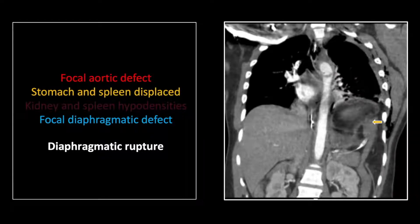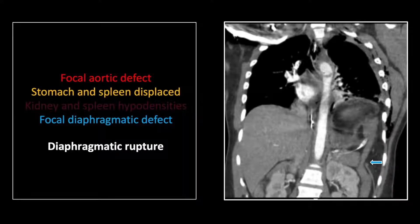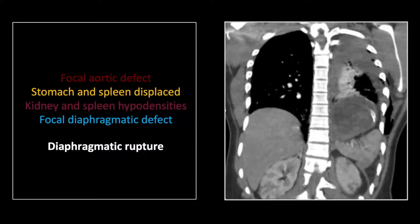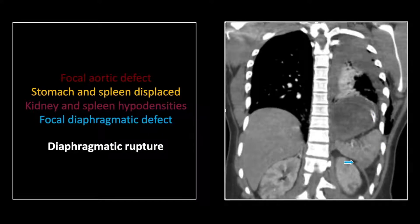Note the elevation of the stomach and colon, and you can see the free edge of the torn diaphragm. A cut further back also shows the elevated stomach and the elevated, rotated spleen. There again is the torn edge of the diaphragm above which the spleen is now resting.